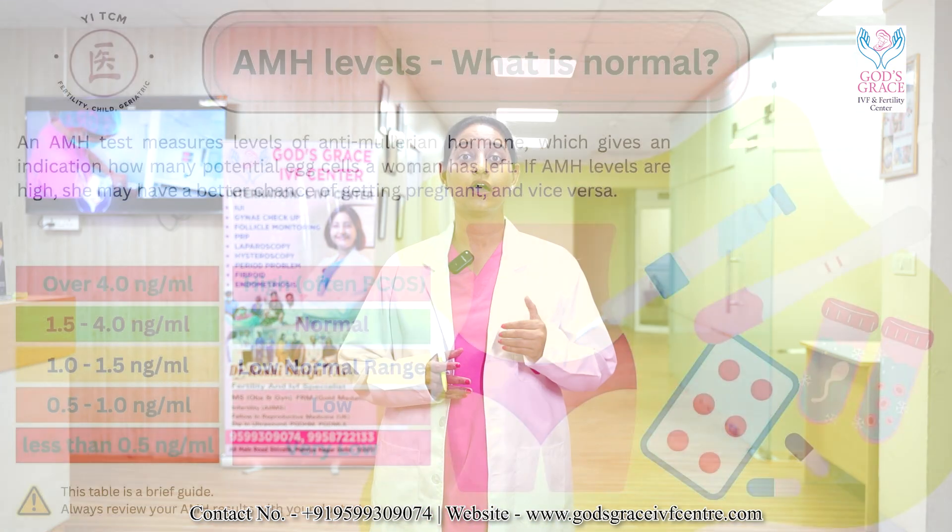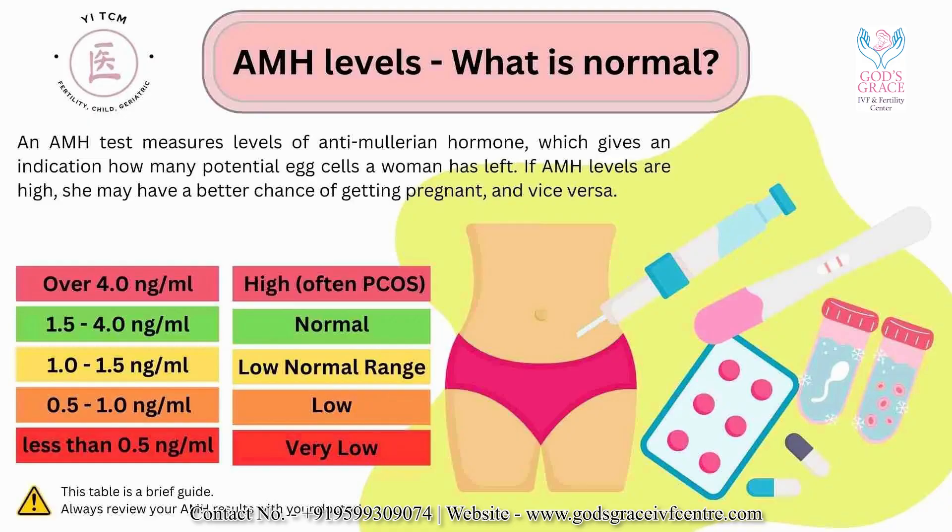An AMH value of more than 4 nanograms per ml tells us that the lady has polycystic ovarian syndrome, or PCOS. The normal value of AMH is approximately 1.5 to 3 nanograms per ml, which normally has a better prognosis. Values of less than 0.5 nanograms per ml are considered low, though it does not tell us whether the lady would get pregnant or not.